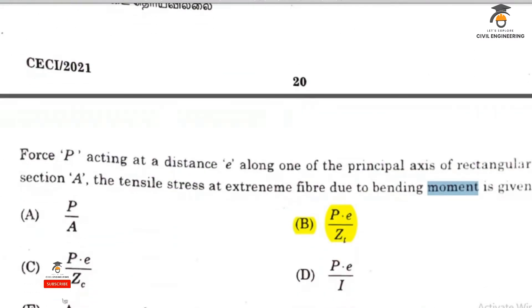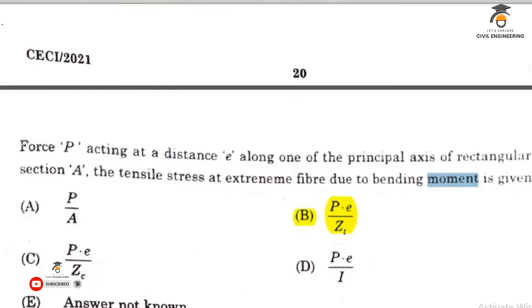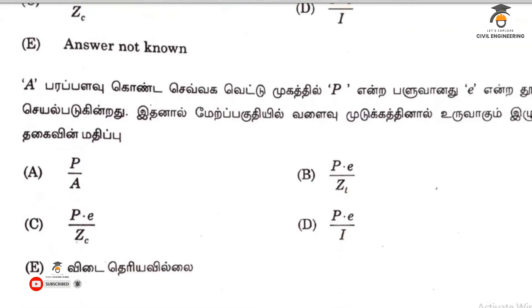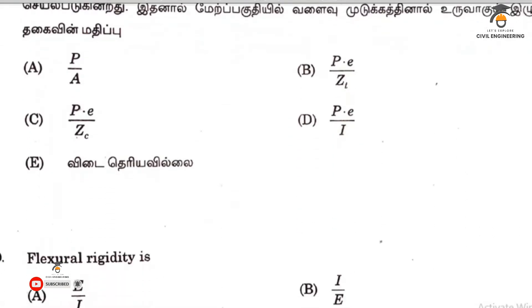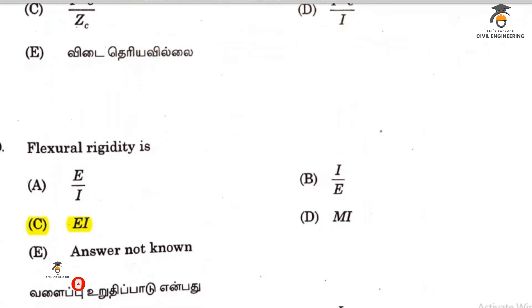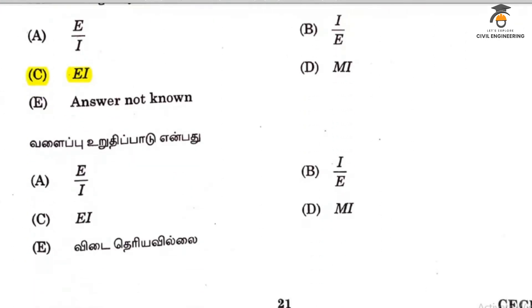The most important design parameter used in designing a continuous flow rectangular sedimentation tank is the surface overflow rate. Water having pH less than 7 is acidic. The force P acting at a distance E gives option 39, option B. The 40th question answer is option C.